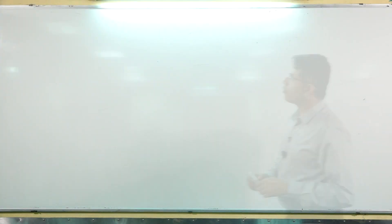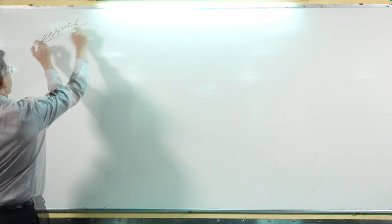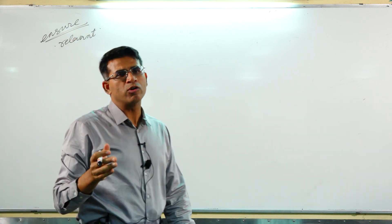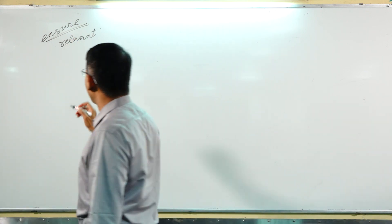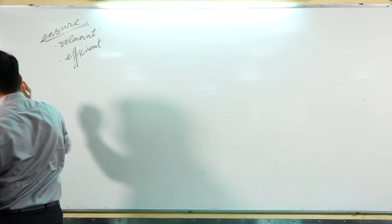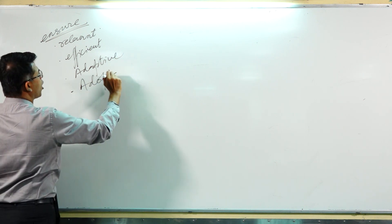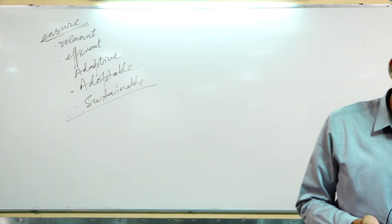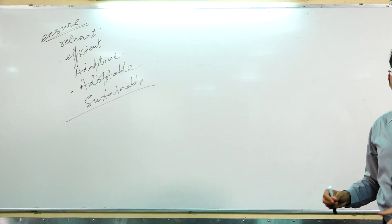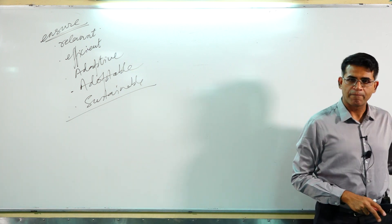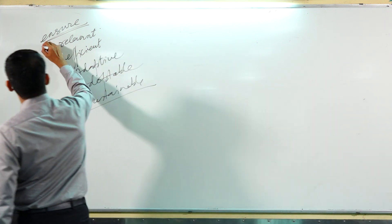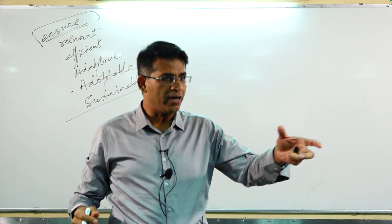In ecosystem-based management, what is it we are trying to ensure? If I talk in terms of what are the attributes I'm ensuring, I want to ensure that our solutions are relevant, efficient, adaptive, adoptable and sustainable. These are all key words.